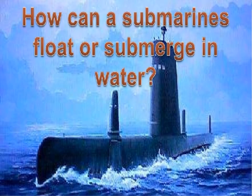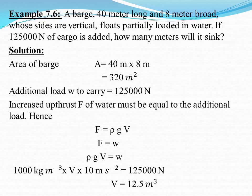A submarine can travel on the surface as well as underwater. When its weight is less than the upthrust, it behaves like a ship. It has a system of tanks — when these tanks are filled with sea water, its weight becomes greater than the upthrust and it dives. It remains underwater until the tanks are emptied of sea water.